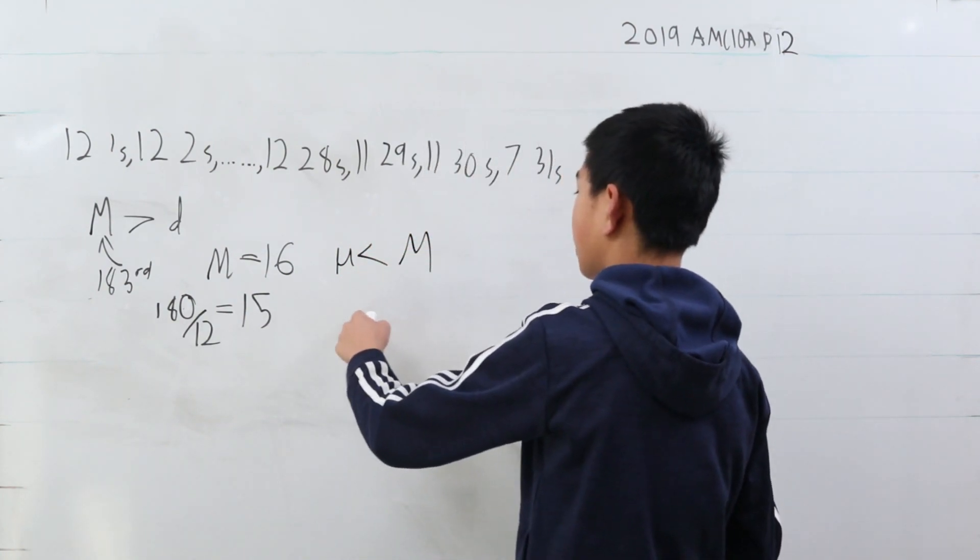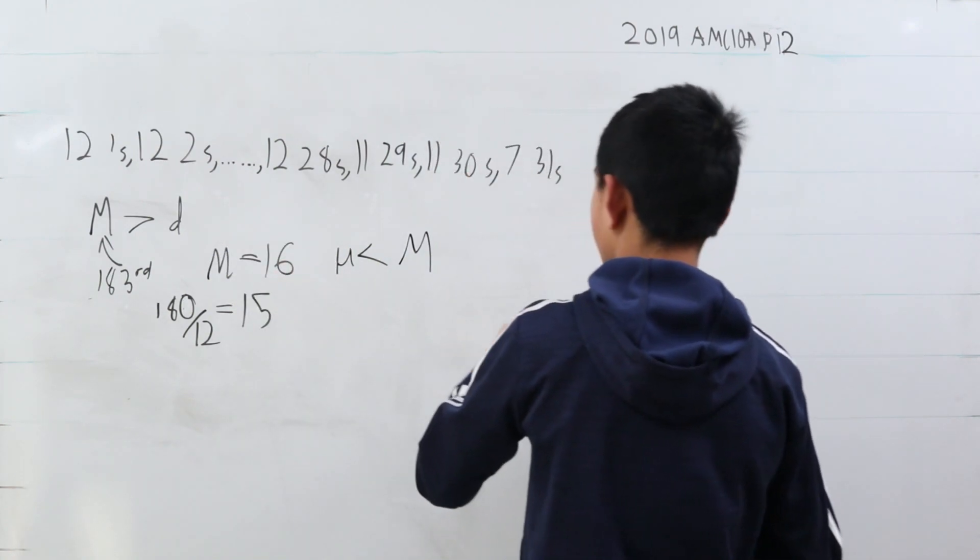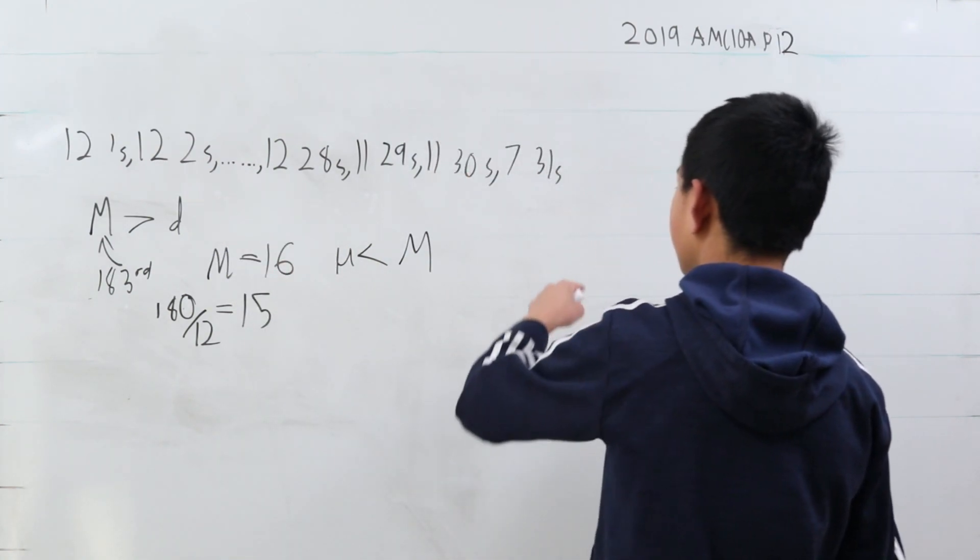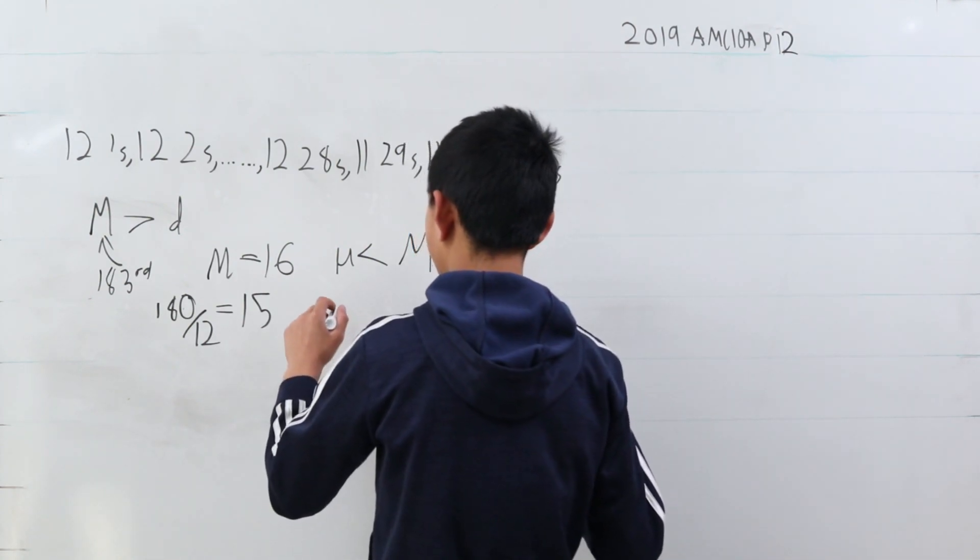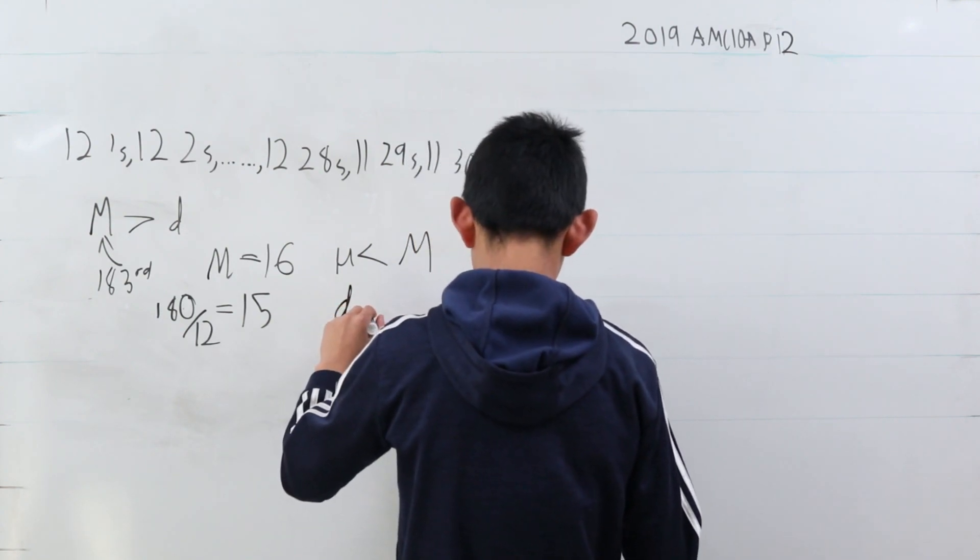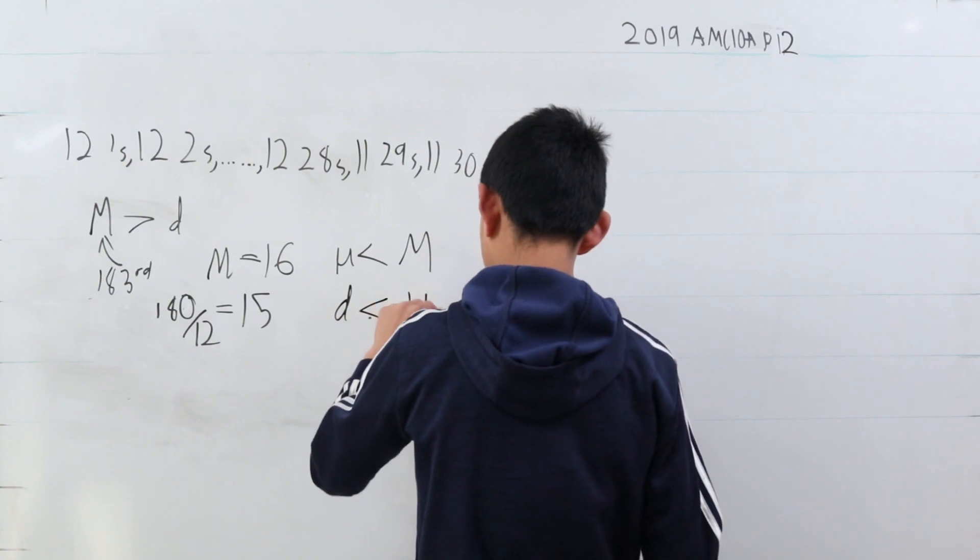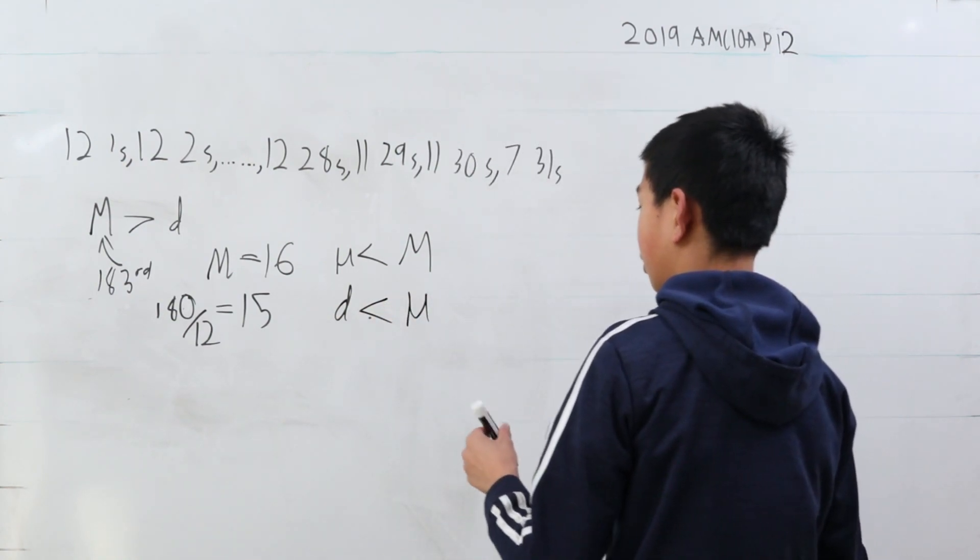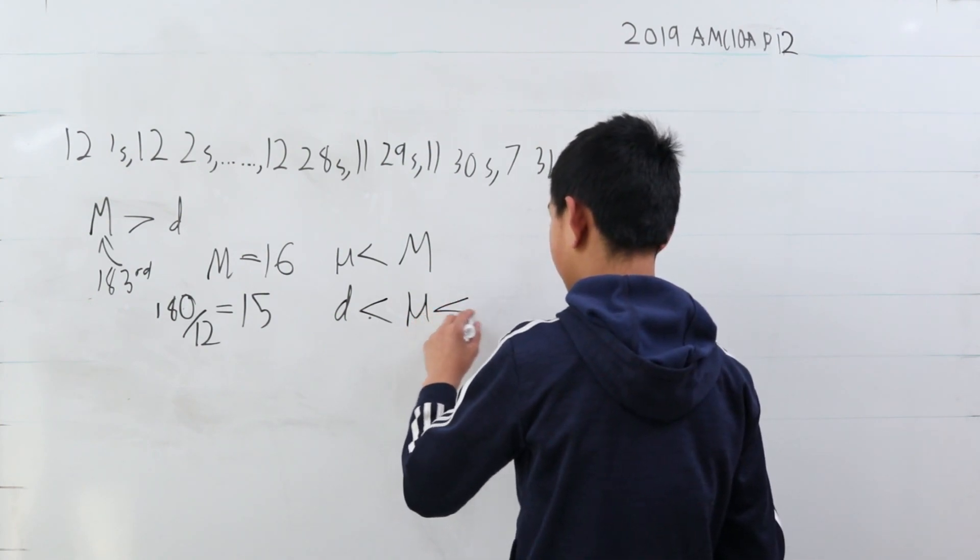But, let's think about μ and d. d is going to be somewhere in here. But μ, it's still going to incorporate these even if they are less. So we know that d is less than μ, and therefore, we can set up this system of equations. d is less than μ, which is less than m,